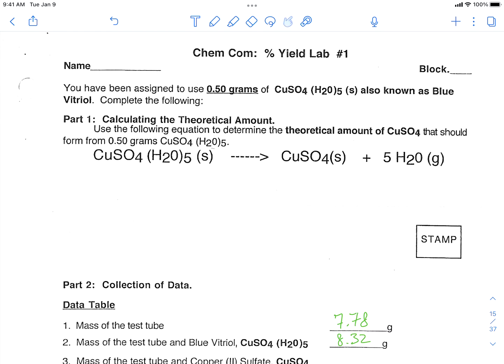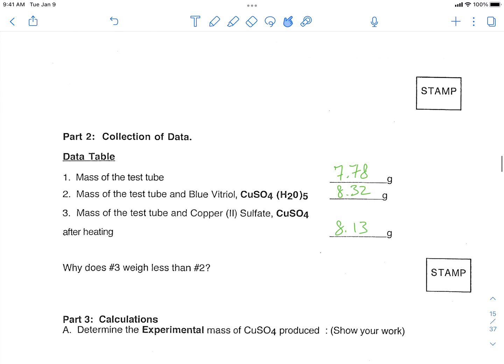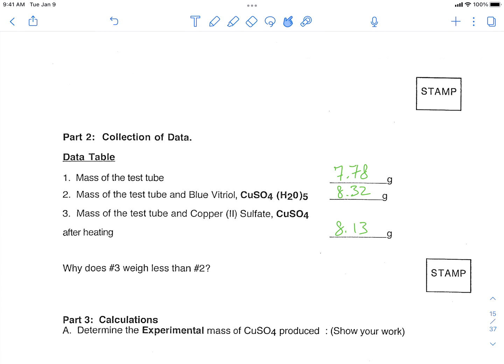And what I've done from the videos, I've written down the data that we collected: the mass of the test tube, test tube plus our copper sulfate. So this is before we heated it, and then this is our mass of our test tube and our copper sulfate after heating. So this is our copper sulfate pentahydrate, then copper sulfate.